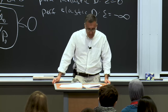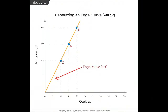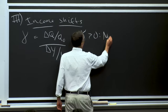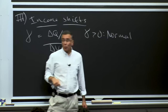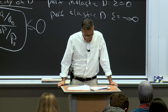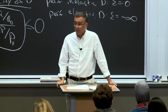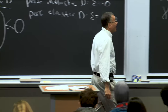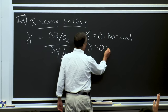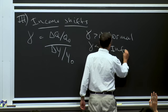Here we have an upward sloping Engel curve, meaning positive income elasticity. We call goods with positive income elasticity normal goods — goods where the more money you have, the more of them you want. However, a number of goods actually have negative income elasticity, gamma less than zero, and we call those inferior goods.